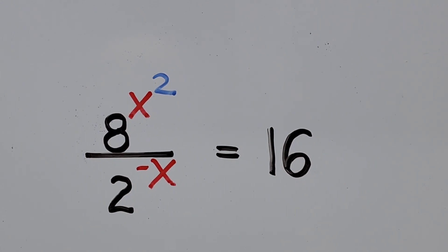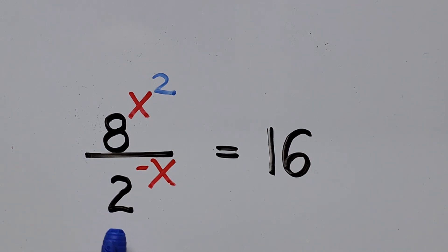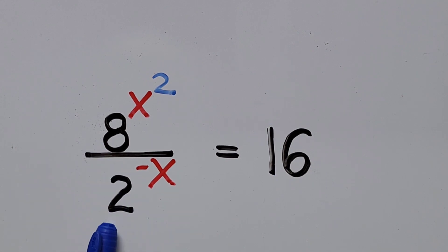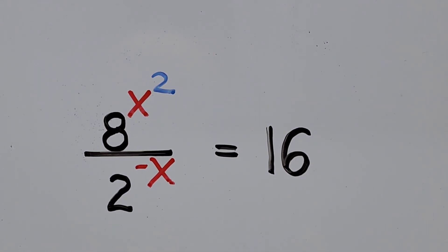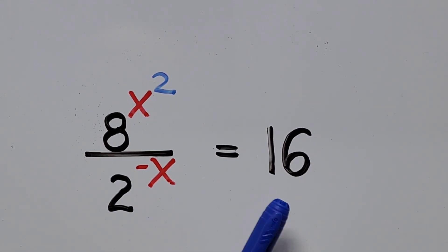If you notice, all the terms of the equation can be transformed into a common base. 16, 8, and 2 — they have something in common. So 8 can be transformed into base 2, and 16 can also be written in exponential form with base 2.